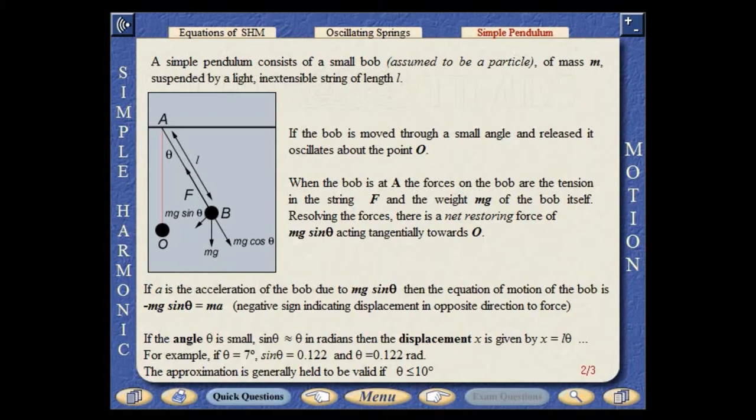In such cases, the motion of the bob is simple harmonic, oscillating about point O.